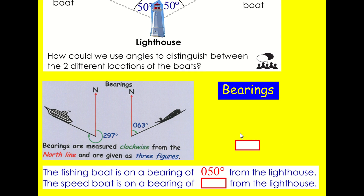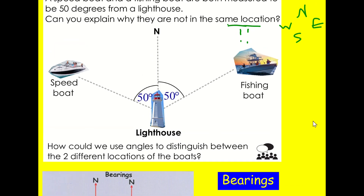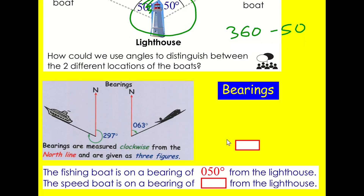How about the speedboat? What bearing is the speedboat on from the lighthouse? In this case, we start from north and go all the way around. Well, probably the easiest thing to do is realise that if I went all the way around to north, it would be 360. So it's 360 and then I'm going to minus this little bit. And the answer is going to be 310 degrees. So if you've understood that, you're in a great place, because that is essentially what we're looking at today: being able to measure bearings and calculate some bearings.